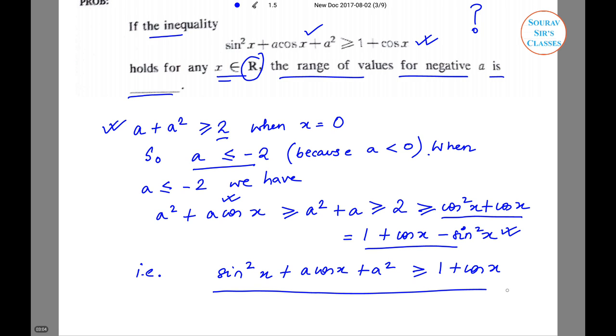So here, the range of values for negative a is a ≤ -2. So the answer will be a ≤ -2.